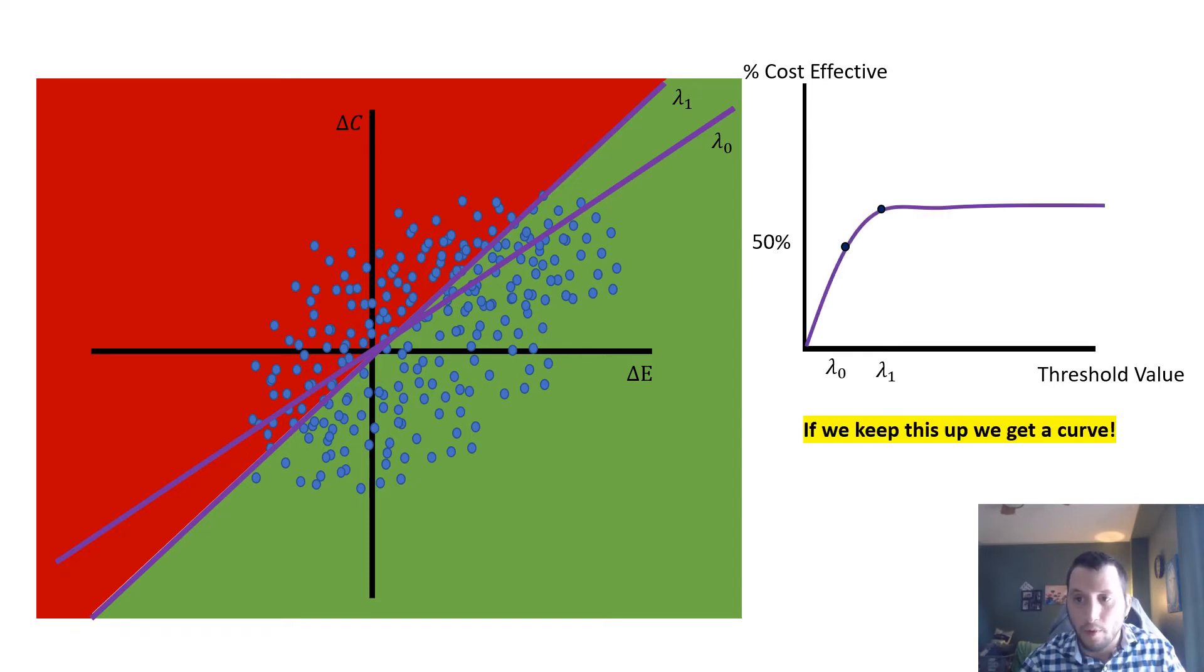Now, we want to keep doing this, and that's the main idea of the cost-effectiveness acceptability curve. We just keep varying our threshold across all positive values, and we see what is the proportion of this simulation that lies under each one of these thresholds. That's what it will communicate, and if we keep that up, we get a curve.